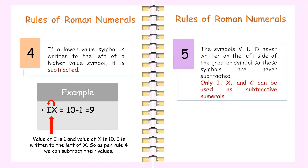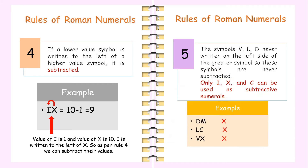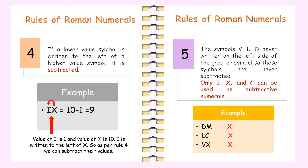Rule 5: The symbols V, L, and D are never written on the left side of a greater symbol, so these symbols are never subtracted. Only I, X, and C can be used as subtractive numerals. For example, writing DMLCVX is wrong as per Rule 5.